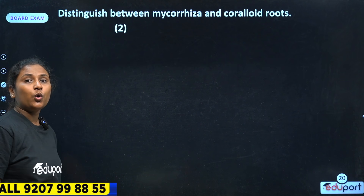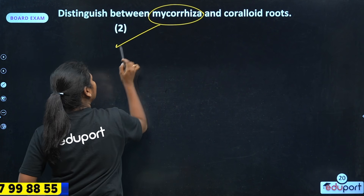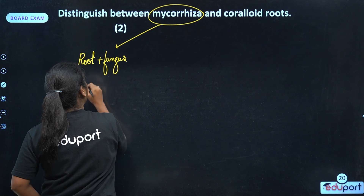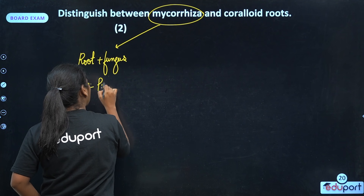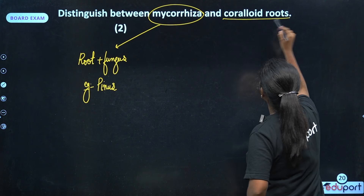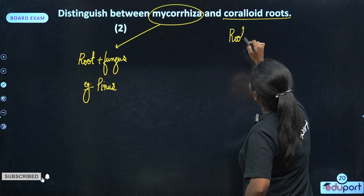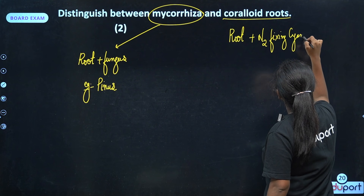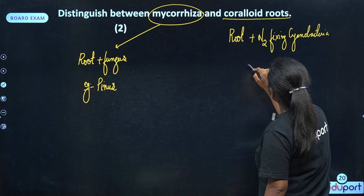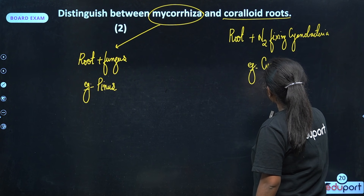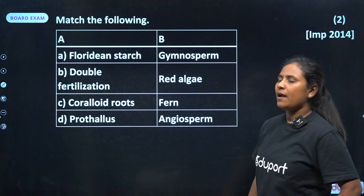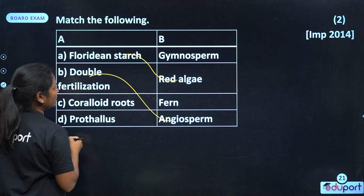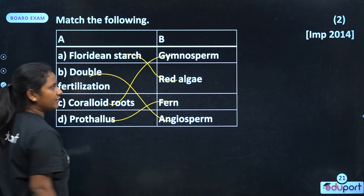Distinguish between Mycorrhiza and Coraloid root. Mycorrhiza is a symbiotic association between root and fungus. Coraloid root in Cycas contains nitrogen-fixing cyanobacteria. Match the following: Floridian Starch — Red Algae; double fertilization — Angiosperm; Coraloid root — Gymnosperm; Prothallus — Pteridophyte.